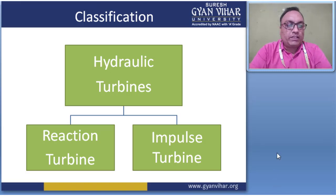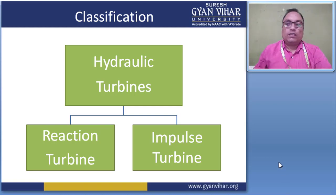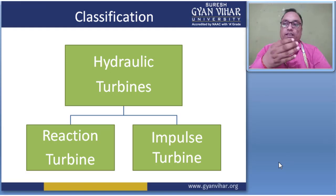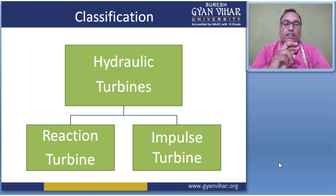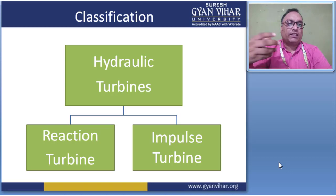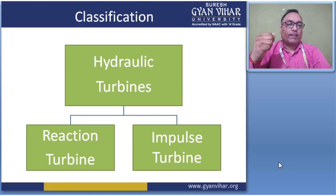The main difference between reaction and impulse turbines is in where pressure drop takes place. In the reaction turbine case, pressure drop takes place in both the stator and rotor. But in the impulse turbine, pressure drop occurs only in the rotor. There are many differences between reaction and impulse turbines which we will go through one by one.